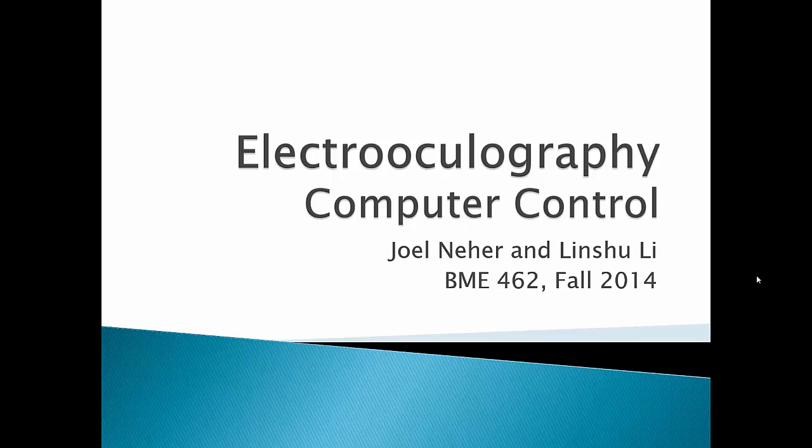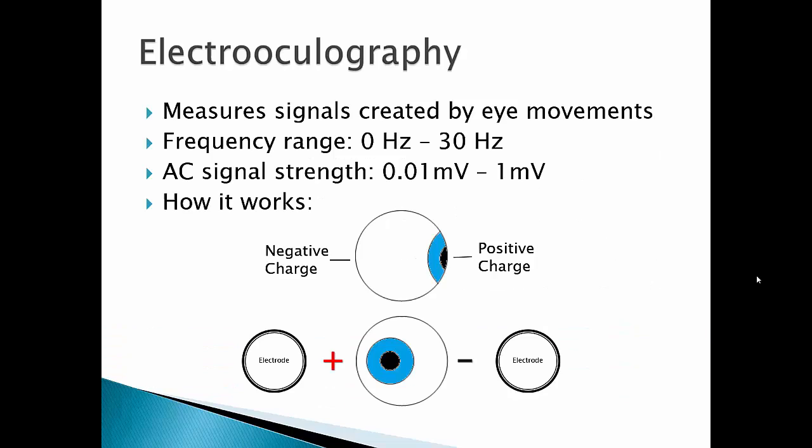The project we chose to go with was computer control with electro-oculography. Electro-oculography measures the signal created by eye movements. The eye behaves like a dipole. It has a positive charge on the pupil and a negative charge on the retina.